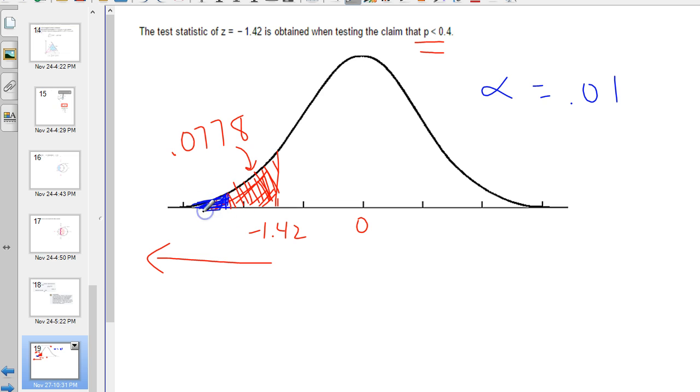So that area, that blue area, is 0.01. And because it's further out in the tail, it's a smaller number, a smaller area. So now we're looking for what number is this that corresponds to 0.01 being in that left tail.